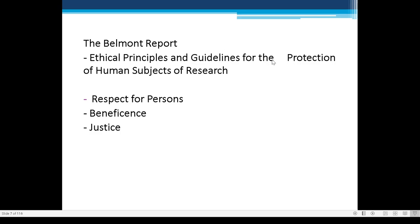Next is the Belmont Report, created roughly twenty to fifty years after the Nuremberg Code. It is an updated set of ethical principles and guidelines for the protection of human subjects of research — an update to the original Nuremberg Code of 1947. The Belmont Report has three features: Respect for Persons, Beneficence, and Justice.